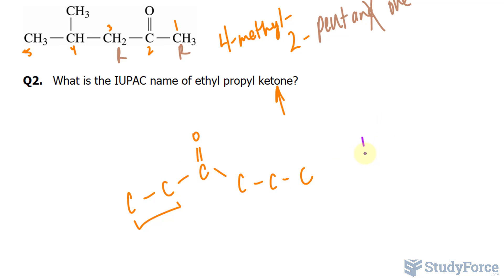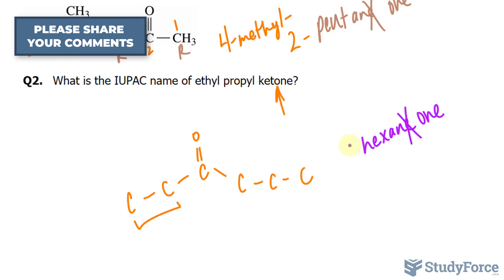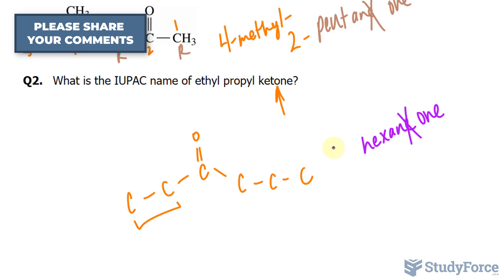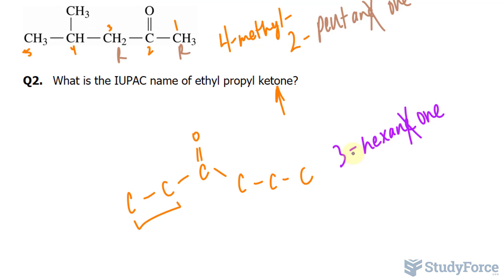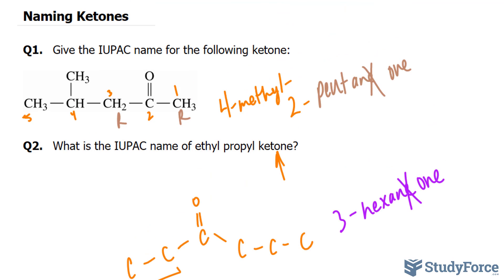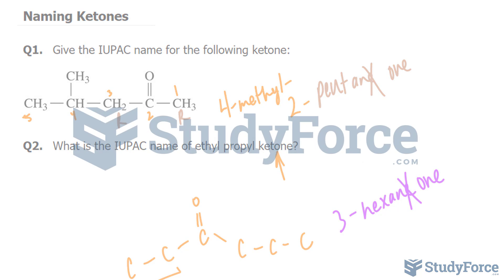Altogether, this is hexane. And because it is a ketone, we drop the E and write down O-N-E. We can say that it's 3-hexanone. That is the answer to question 2, and that is how to name simple ketones. If you have any questions, please leave a comment below and we'll gladly help you.